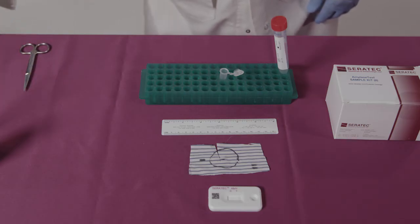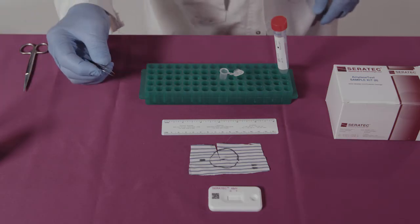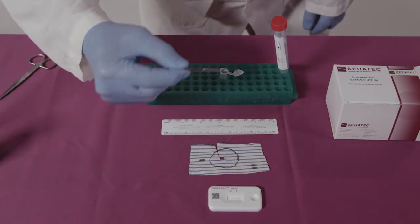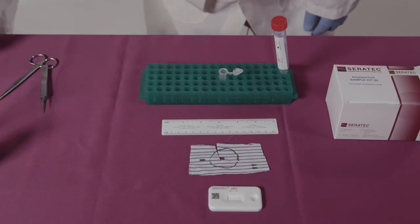Prepare an extract of a stain by cutting out a 5 millimeter by 5 millimeter area and extracting for 10 minutes in 300 microliters of the standard buffer at room temperature.